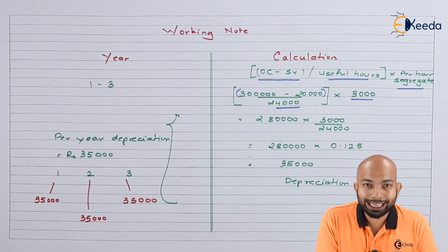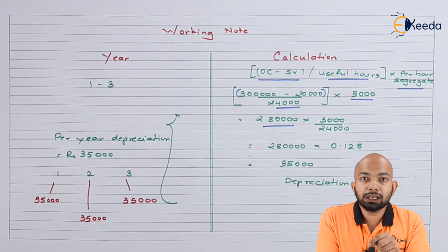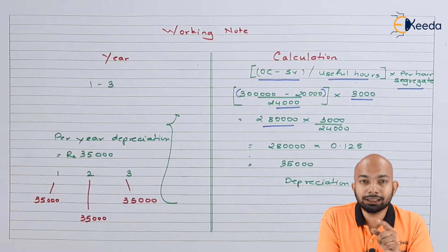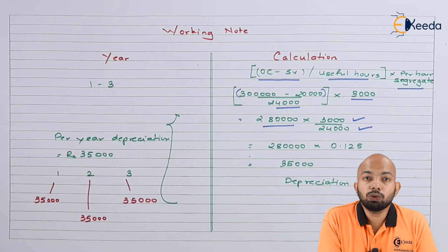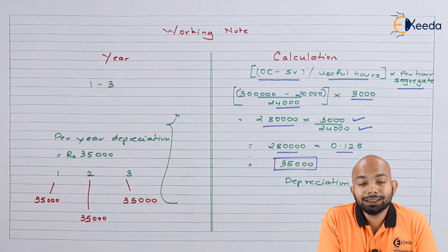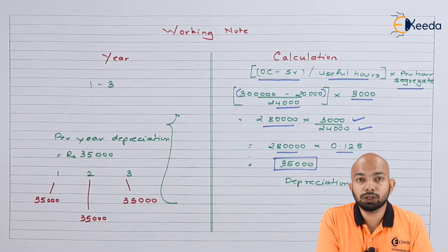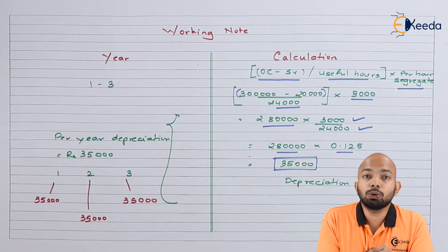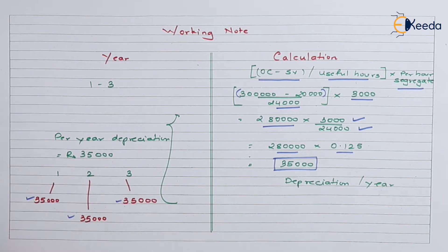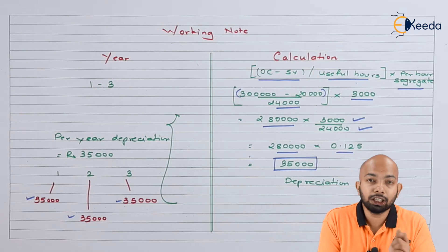3,00,000 minus 20,000 gives 2,80,000, which is multiplied by 3,000 hours per year divided by 24,000 useful hours. 3,000 divided by 24,000 gives 0.125, multiplied by 2,80,000 gives a final depreciation of 35,000 per year. So for year 1, year 2, and year 3, the annual depreciation is 35,000 each.